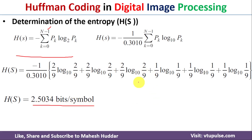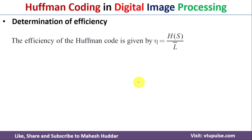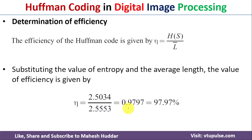Finally, we find the efficiency using the formula: efficiency = H(S) / L̄, where H(S) is the entropy and L̄ is the average length. Substituting the values, we get an efficiency of 0.9797, which equals 97.97%. This is how we find the Huffman tree, average code length, entropy, and efficiency. I hope the concept of Huffman coding is clear. If you like the video, please like and share, subscribe, and press the bell icon for regular updates.